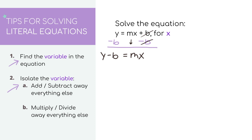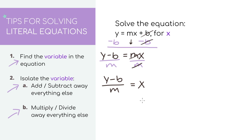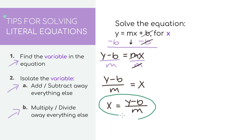We're getting closer to fully isolating our variable x, but there's still the m in front of it. When you see mx, it's the same thing as m times x. So to get rid of it, you need to do the opposite and divide by m. Let's do it to both sides. You're left with y minus b divided by m equals x. I'm just going to flip it so that x equals y minus b over m. This isn't your typical solution like x equals 3, but this entire expression is our answer.